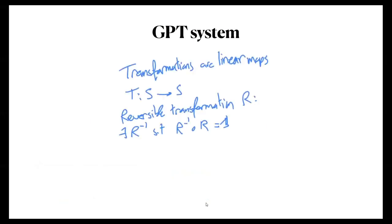Transformations are linear maps which take states to states. There's a subset of transformations called reversible transformations: for any reversible transformation R, there exists an inverse, and composing them sequentially gives the identity. Effects can be viewed as linear maps on states, and states as linear maps on effects, because of the inner product structure.